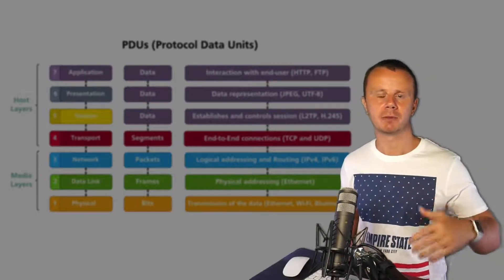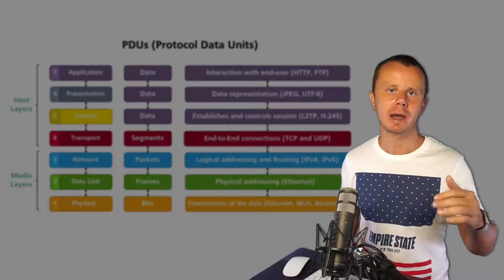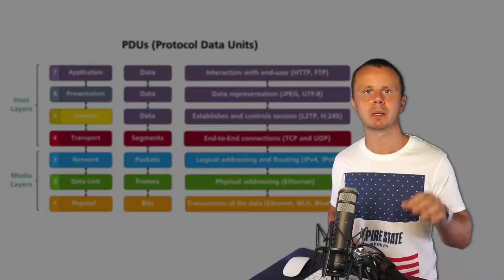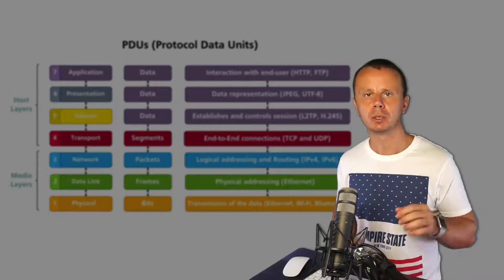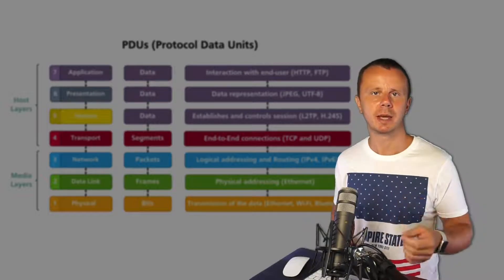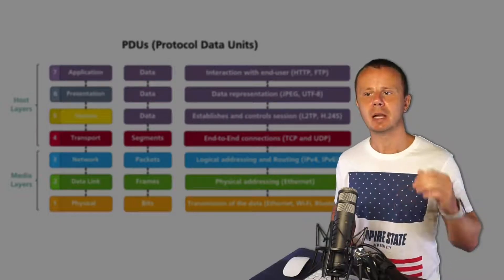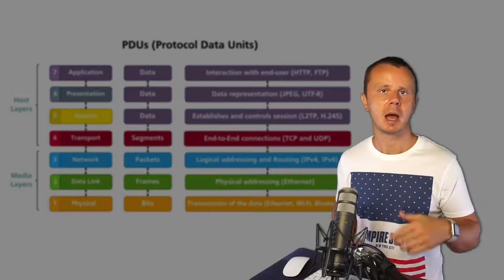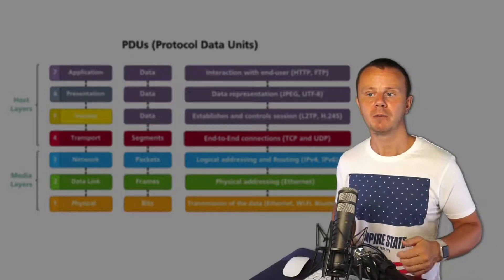These are PDUs - Protocol Data Units - that describe the smallest pieces of information on different layers of the OSI model. I'll use such terms as bits, frames, packets, and segments a lot in this course, and please remember them, because when I say packets, I'll mean network layer of the OSI model and I'll talk about IP packets - IP version 4 or IP version 6 packets. If I say frames, I'll mean that I'm talking about data link layer of the OSI model.